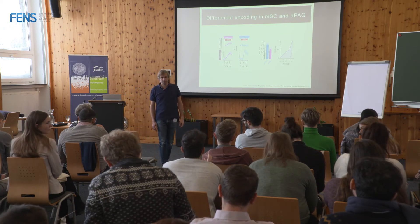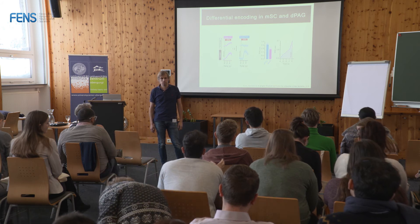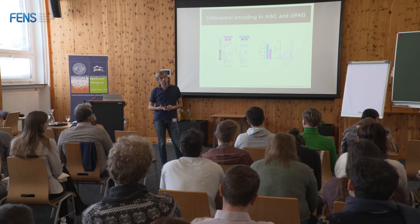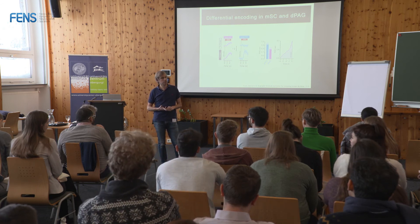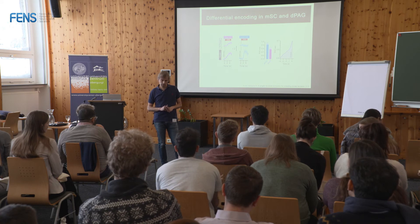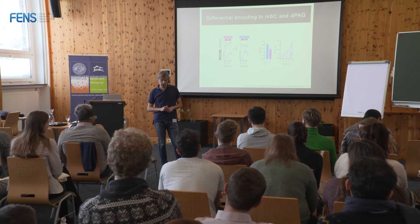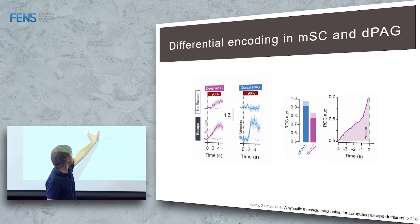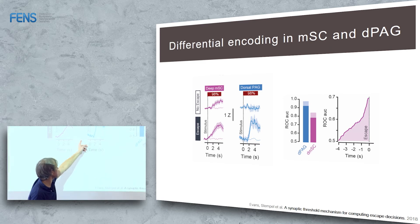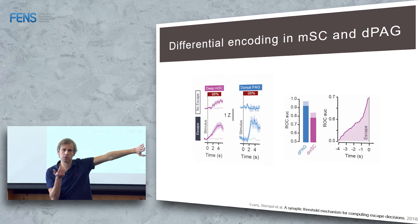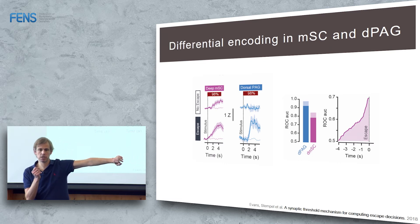A question is raised: since inactivation starts 500ms before the stimulus and continues throughout, what's happening before the stimulus in the dorsal PAG calcium signal? The clarification is that optogenetic inactivation starts 500ms before the stimulus and continues throughout the stimulus presentation — it's not just before. The lens implant does destroy a bit of the SC, but animals still escape to the loom because there's still enough SC remaining to function and drive the PAG response.